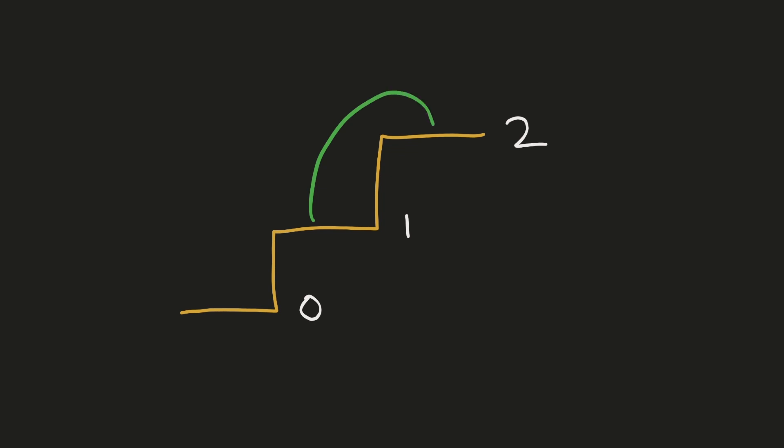One way to reach over there is to take a single step from position 1. And the only other way to reach there in one move is to take a double step from position 0.